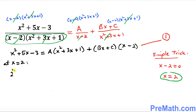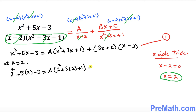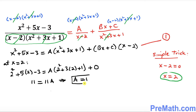At x equals 2, we plug into equation number one: 2 squared plus 5 times 2 minus 3 equals A times (4 plus 6 plus 1). The (x minus 2) factor becomes zero, so the entire (Bx plus C) term drops out. Simplifying the left-hand side gives us 11, so A equals 1 after evaluating the right-hand side coefficient.